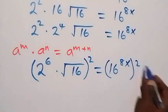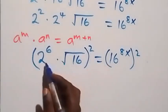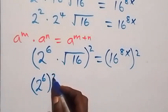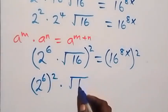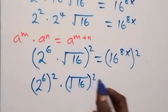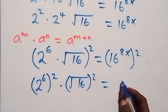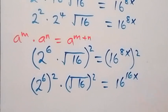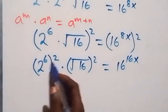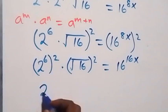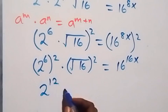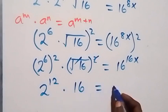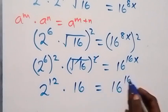Now let's square both sides again. We square this side, and we affect this and have 2 raised to power 6, raised to power 2, then times root 16, also raised to power 2, equals 16 raised to power 16x. From the law of indices, this multiplies and we have 2 raised to power 12, then times root 16 times root 16, equals 16 raised to power 16x.